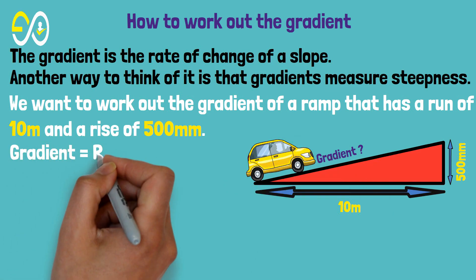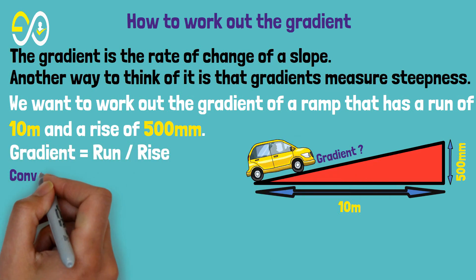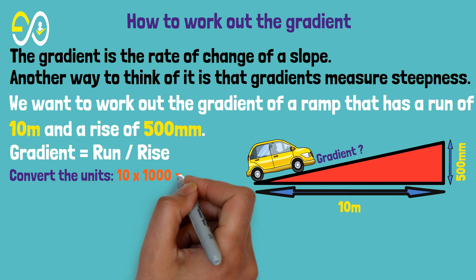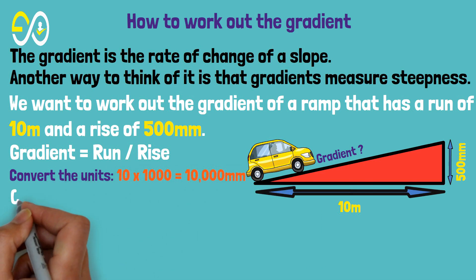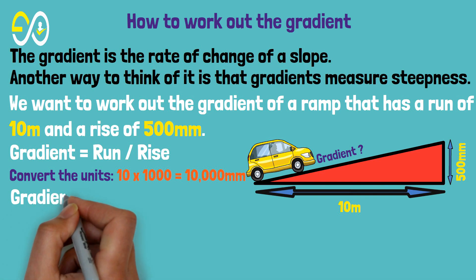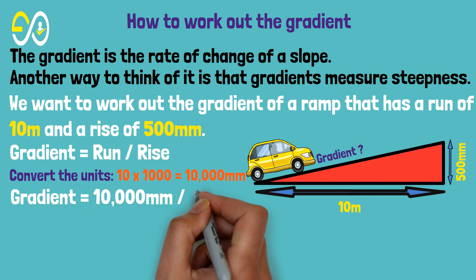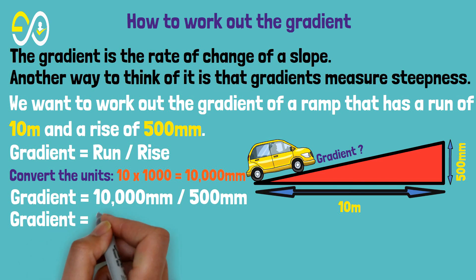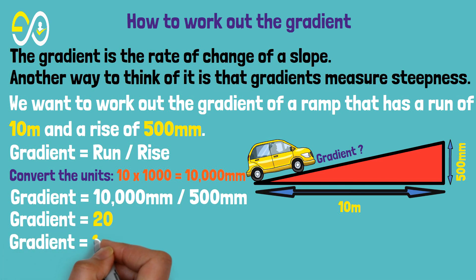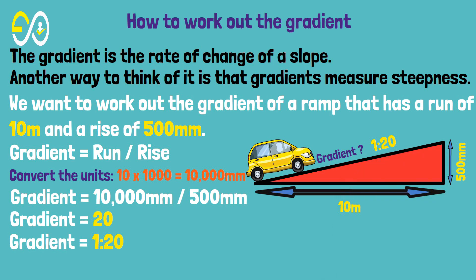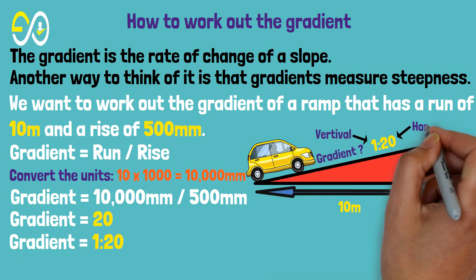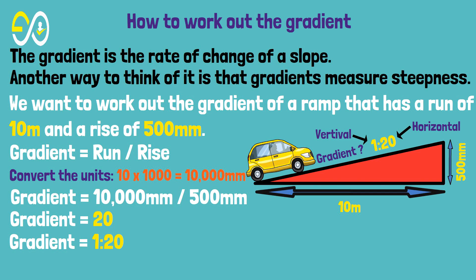Gradient equals run over rise. Convert the units: 10 times 1000 equals 10,000 millimeters. Gradient equals 10,000 millimeters over 500 millimeters. Gradient equals 20, written as 1 in 20. This shows that for every 1 meter up, you travel 20 meters across.